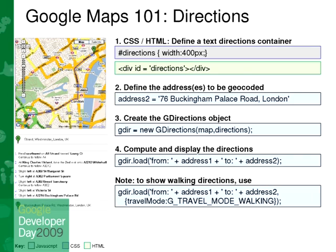Another service that is quite useful is driving directions. You just give the starting point and the end point, and the service figures out the best route for you. You can have something very automatic — just say 'load' and it will display all the routing information in a div. But you can also retrieve that object and manipulate each step, for instance if you want to add additional information because it's a street you know or you have some data to override those routing directions.